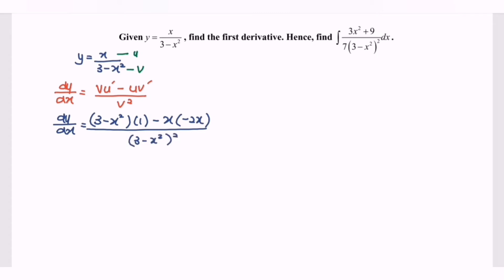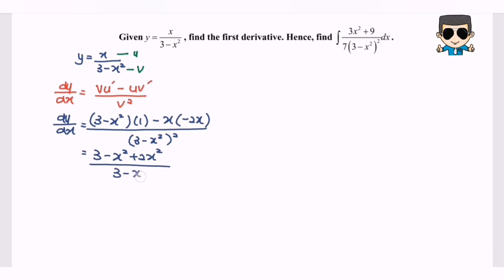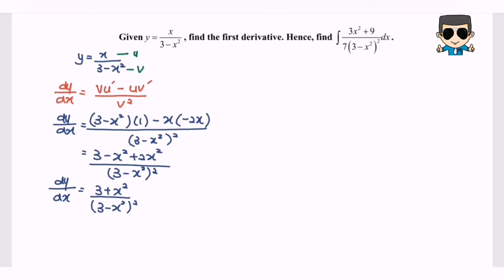Simplifying: (3 - x²) + 2x² over (3 - x²)², which gives dy/dx = (3 + x²) / (3 - x²)². So the first derivative is (3 + x²) / (3 - x²)².